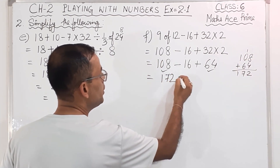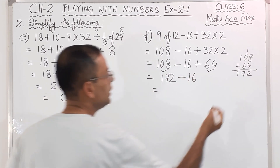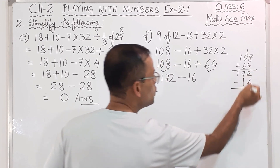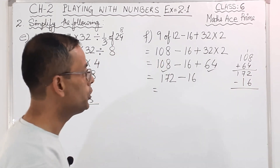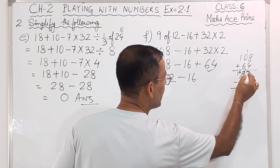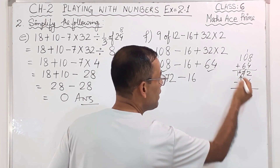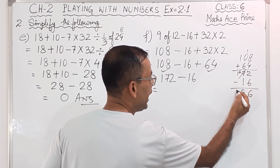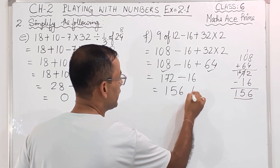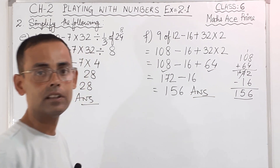So what you get: 172 minus 16. Now we have to subtract. 2 and 6 — can you subtract? No, you have to borrow. So cut this 7, make it 6 and this becomes 12. 12 minus 6 is 6, 6 minus 1 is 5, and then 1 comes down — so 156, and this is the answer.